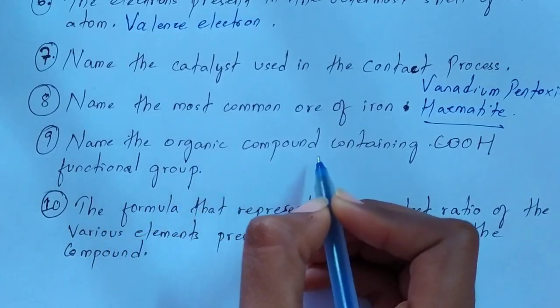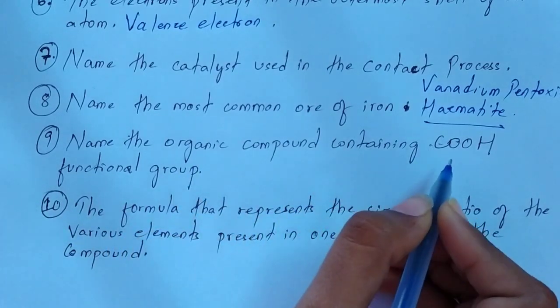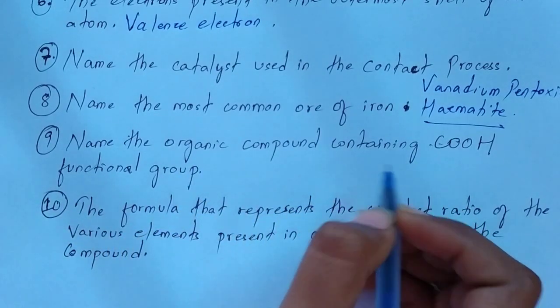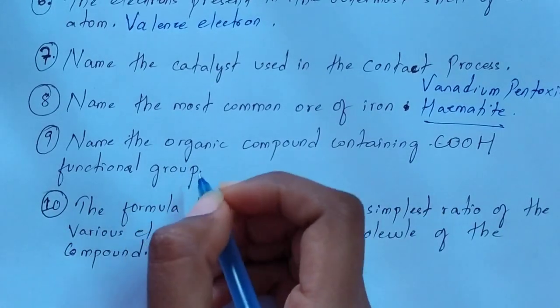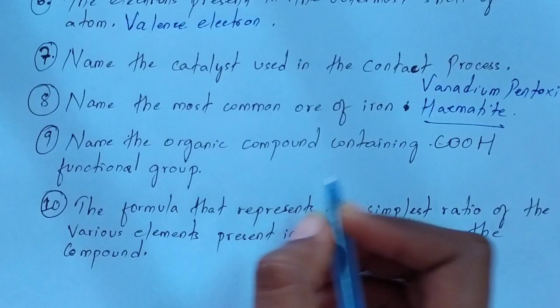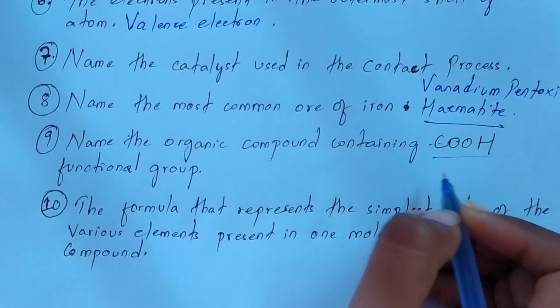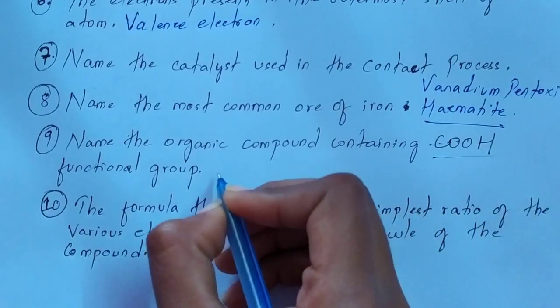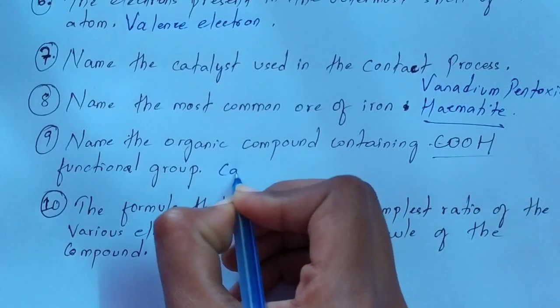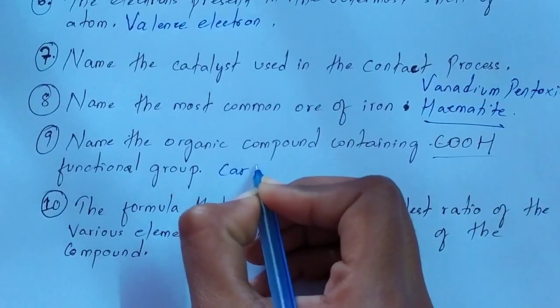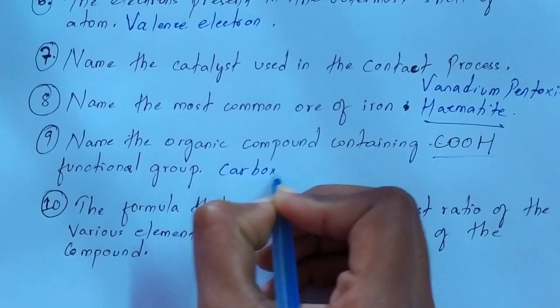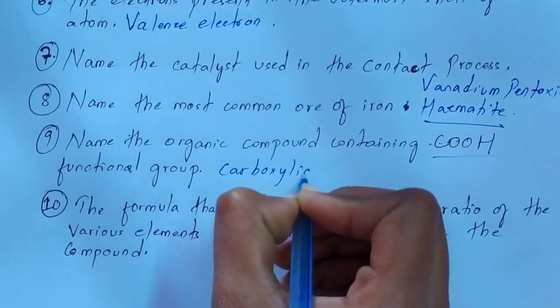Question number 9: name the organic compound containing the COOH functional group. The organic compound in which COOH is present as the functional group is carboxylic acid.